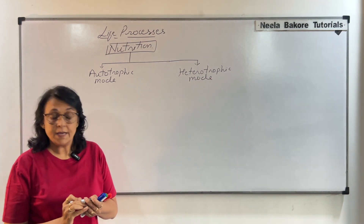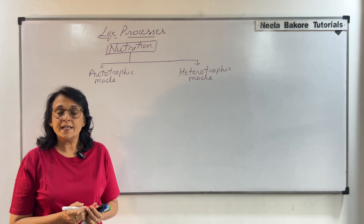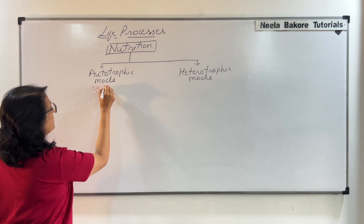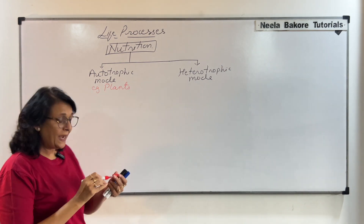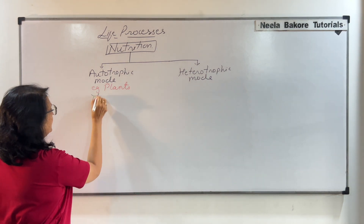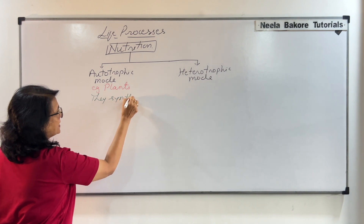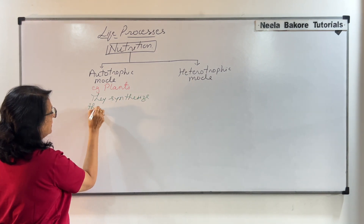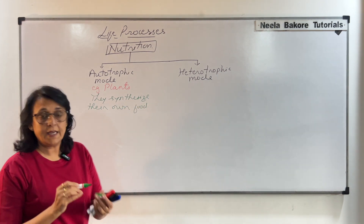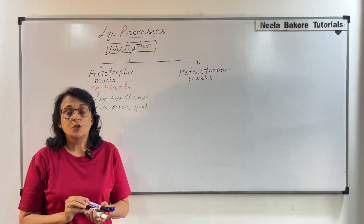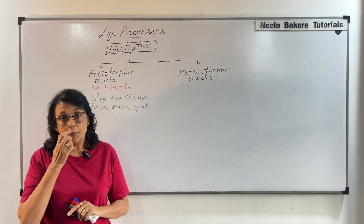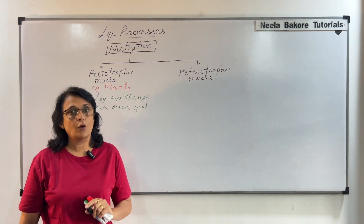Autotrophic mode of nutrition means when the organism synthesizes its own food. Our example here is of plants — plants synthesize their own food. Such organisms are known as autotrophic organisms and this type of mode is known as autotrophic mode of nutrition.